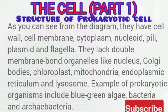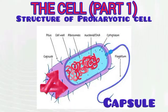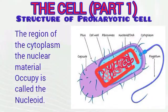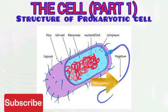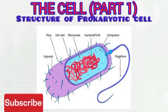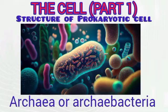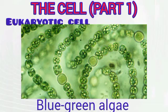Let's take a look at the structure of the prokaryotic cell. As you can see from the diagram, they have the cell wall, pili, cell membrane, capsule, nucleoid, plasmid, flagellum (or flagella in plural form), and the cytoplasm. They lack the double membrane-bound organelles such as the chloroplasts, the mitochondrion, and the endoplasmic reticulum. Examples of prokaryotic cells include bacteria, archaea (archaebacteria), and blue-green algae.